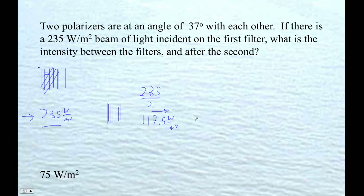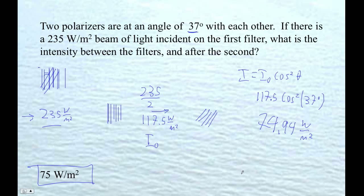Now we've got this other filter here that's at a 37 degree angle. So now we can use our fancy formula. Here's our I naught, now this intensity over here is going to be our I naught cos squared theta. So let's plug it in, 117.5 cos squared of 37 degrees. So now we're ready, first I'm going to check the mode on my calculator, I'm in degrees. 117.5 times parentheses cos 37, right parentheses squared, 74.94, and that's watts per square meter, so 75, roughly 75 watts per square meter.